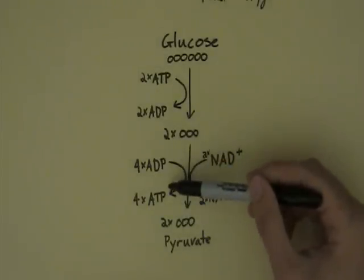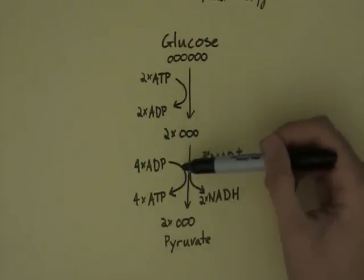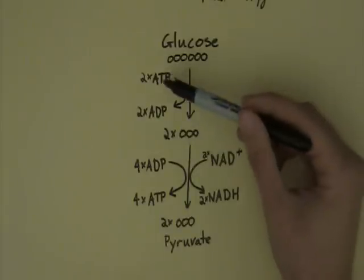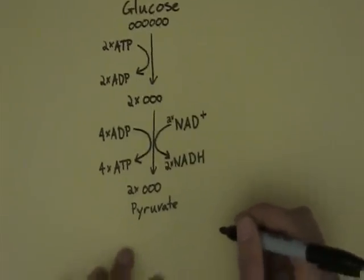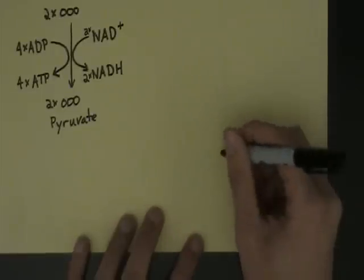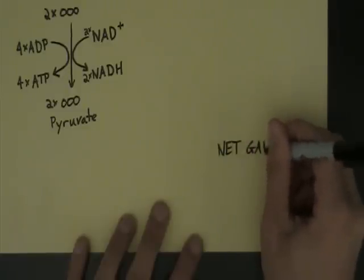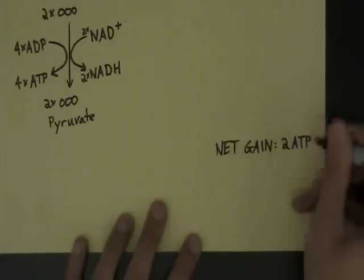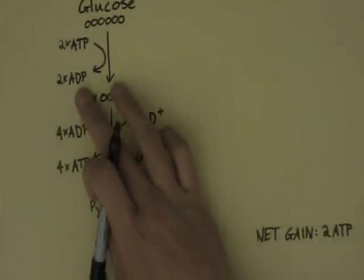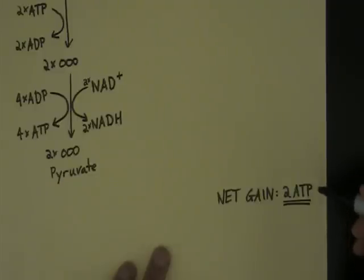Now, one thing that's important to understand is: while we put some energy in to start this reaction, we got more energy out. We lost two to start with, but we got four back. So we have, I'm just going to write this over here, a net gain of two ATP.